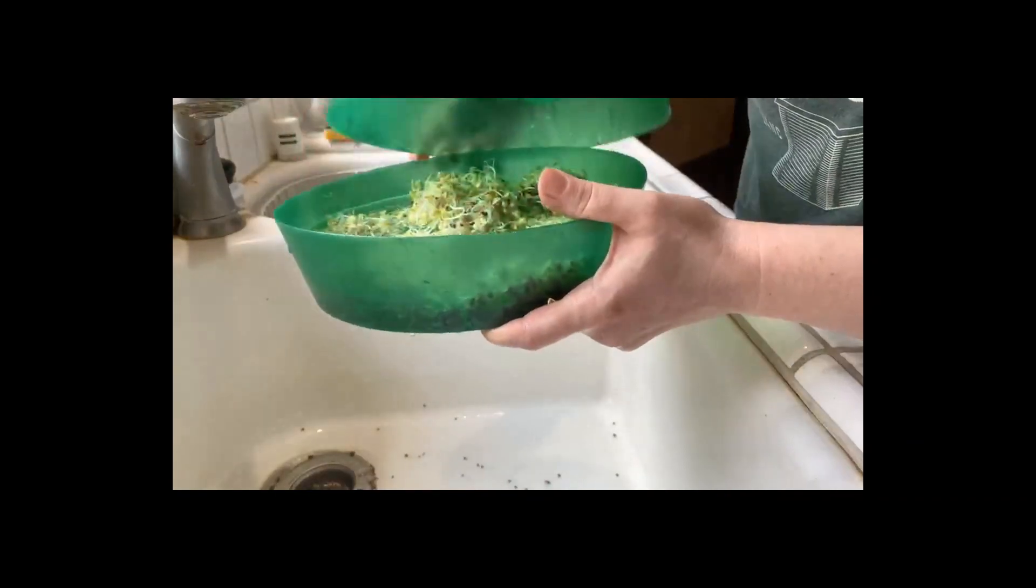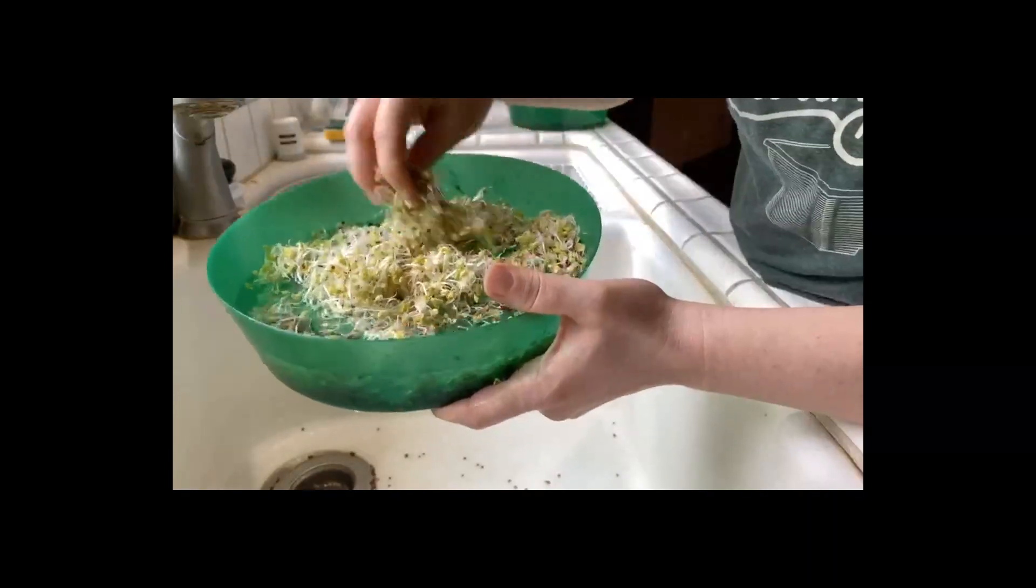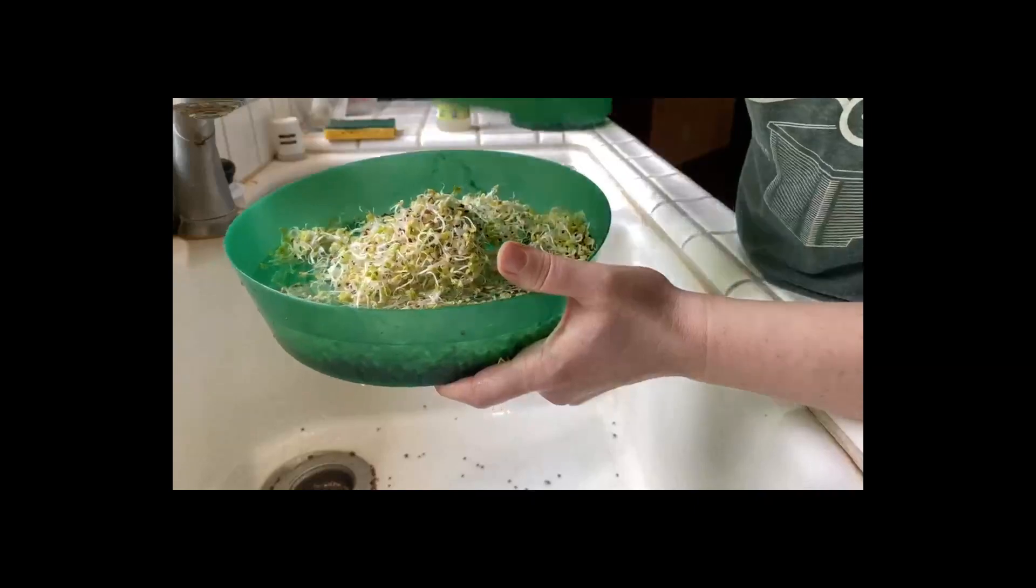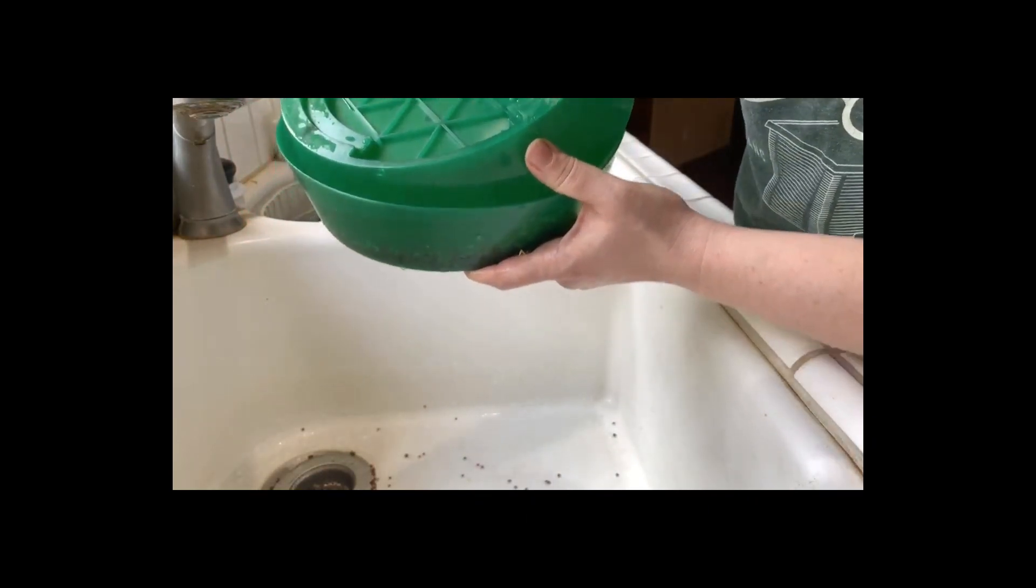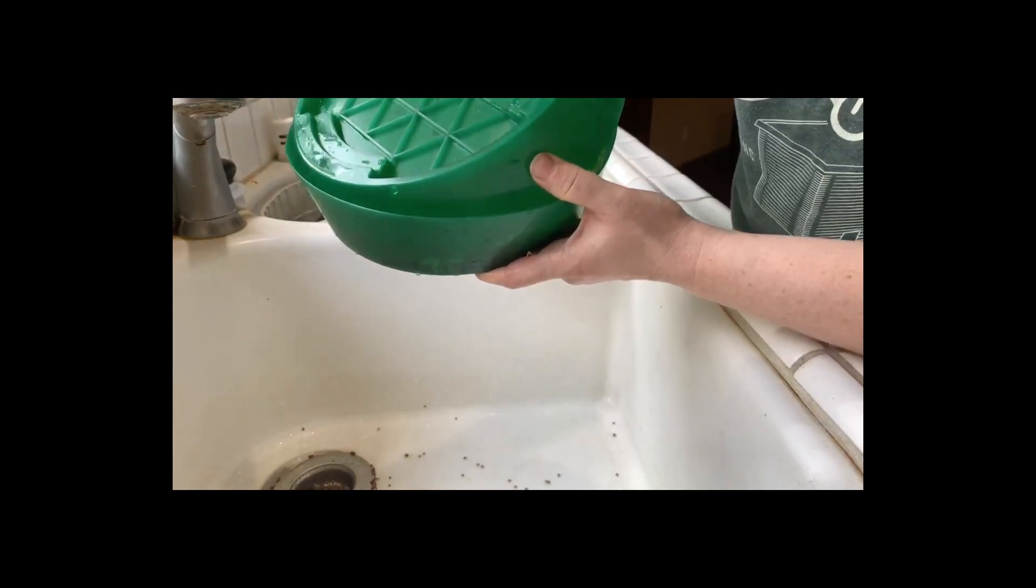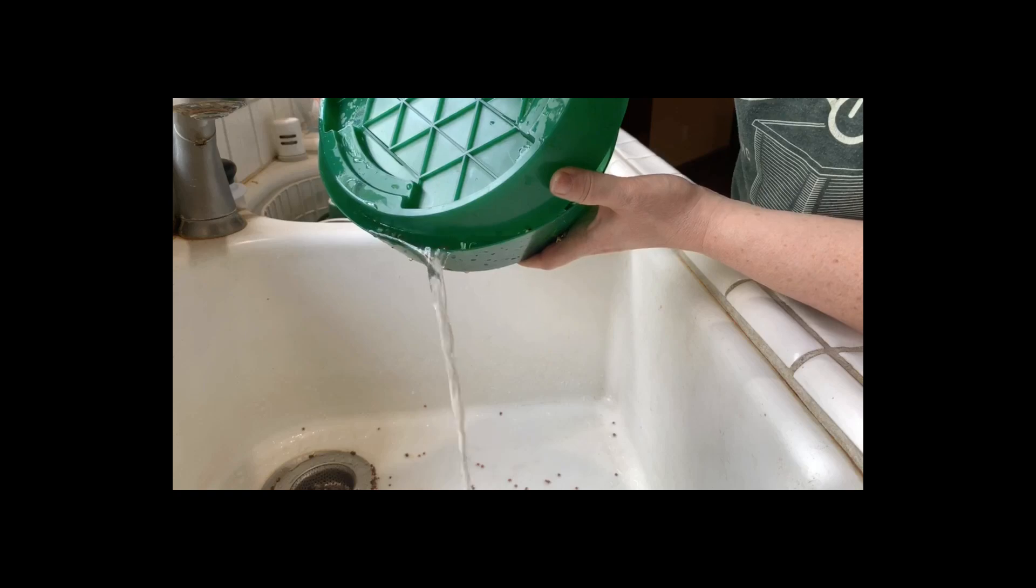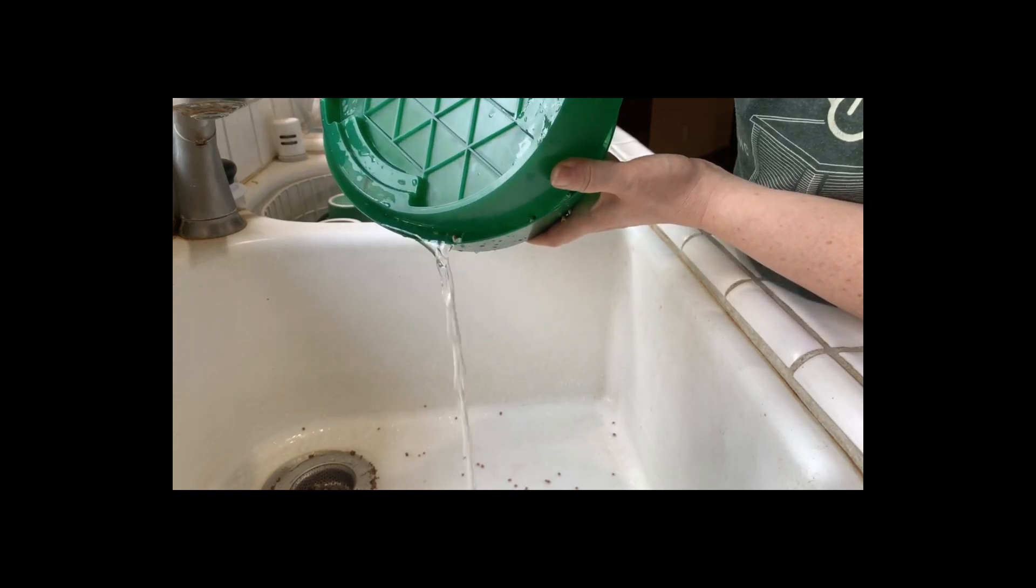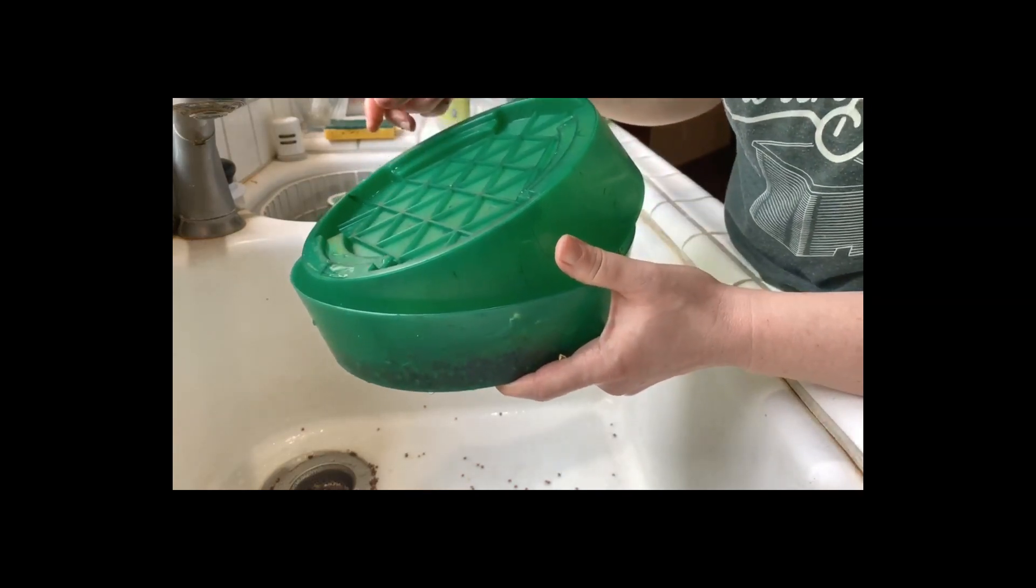So once you've done that, you'll just continue to break up the sprouts a bit and then use another tray or you can use a strainer and just kind of pour out that water and allow the remaining shells to come out. Okay, so I'm going to finish up with my other trays and then I'll show you what we're going to do next.